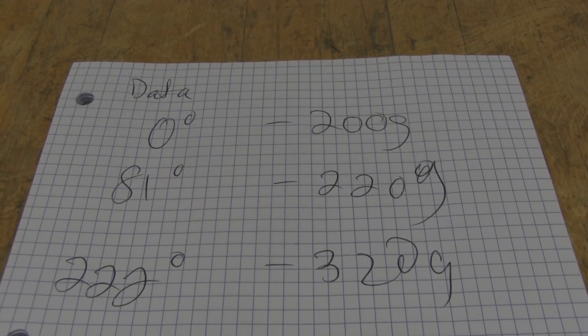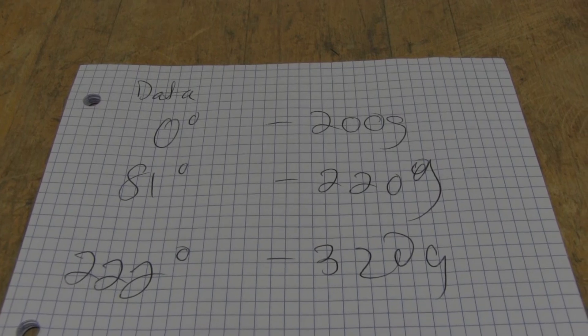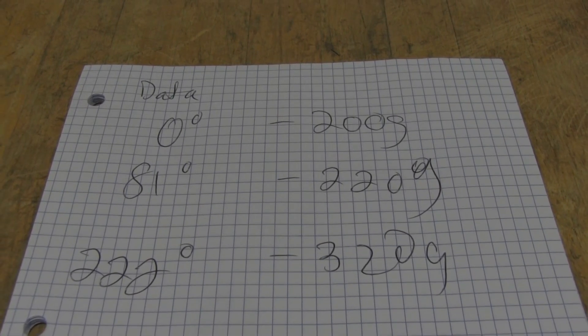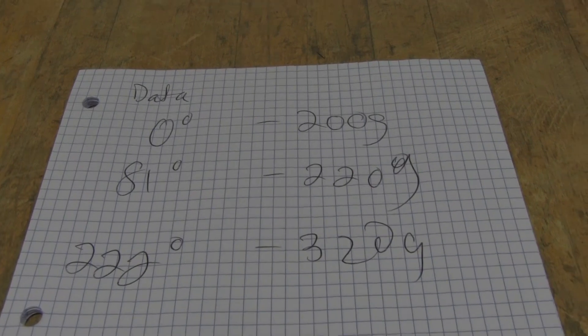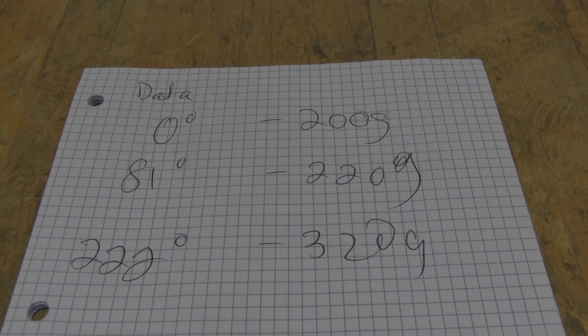Here are your three data points. At 0 degrees, we have applied 200 grams. At 81 degrees, we have applied 220 grams. And finally at 222 degrees, we have applied 320 grams.